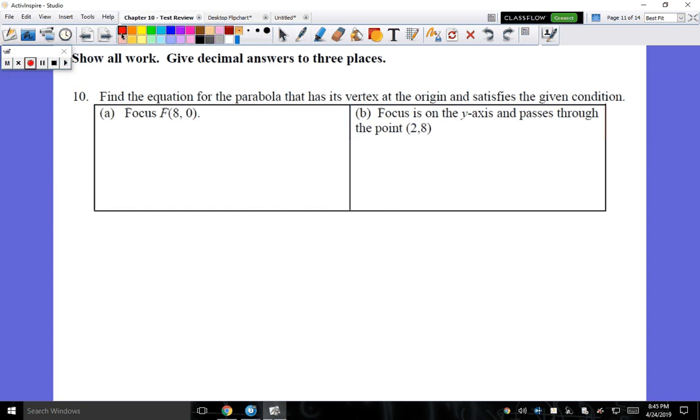Okay, so let's look at number 10. We're going to find the equation for the parabola that has its vertex at the origin, at (0,0), and satisfies the given condition.